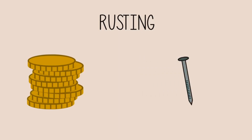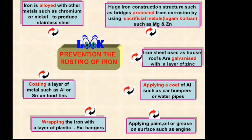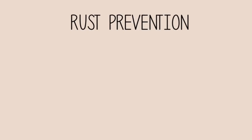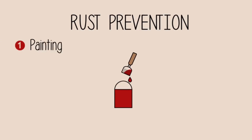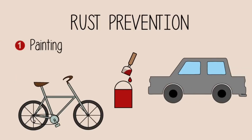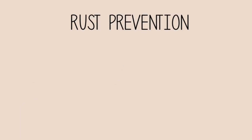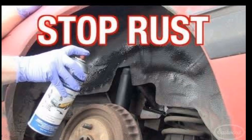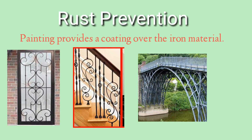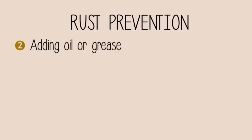Rusting can be prevented in the following ways. The first method is painting, which is generally done on bicycles and cars. When a coat of paint is applied to the surface of an iron object, air and moisture cannot come in contact with the iron, so rusting is prevented. This is also done on window grills, railings, iron bridges, and coaches.